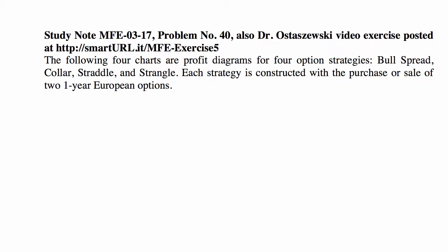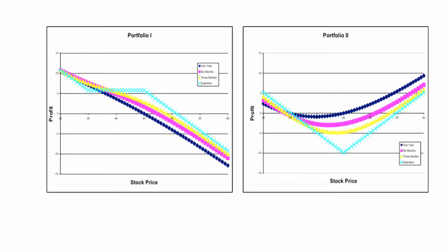Each strategy is constructed with the purchase or sale of two one-year European options. Looking at Portfolio 1 and Portfolio 2, you need to remember that you create these portfolios by combining two options, and the payoff at maturity — which is the least visible line but gives you the most information — is the sum of the payoffs of the two options.